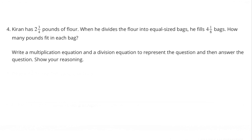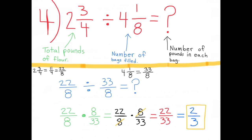Show your reasoning. Two and three-fourths represents the total pounds of flour. Four and one-eighth represents the number of bags filled. The question mark represents the number of pounds in each bag. Two and three-fourths divided by four and one-eighth equals the number of pounds in each bag.